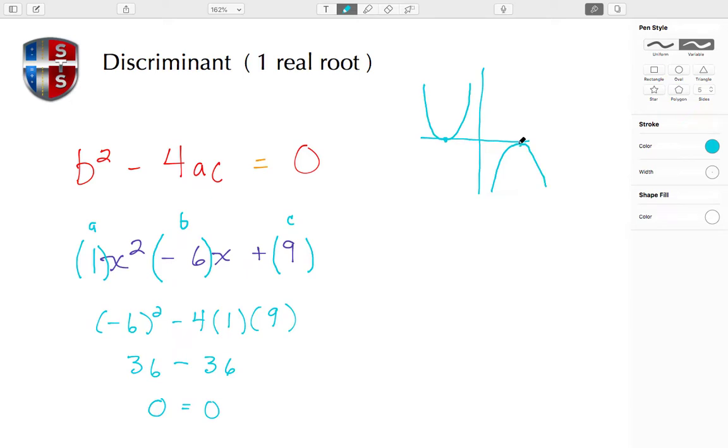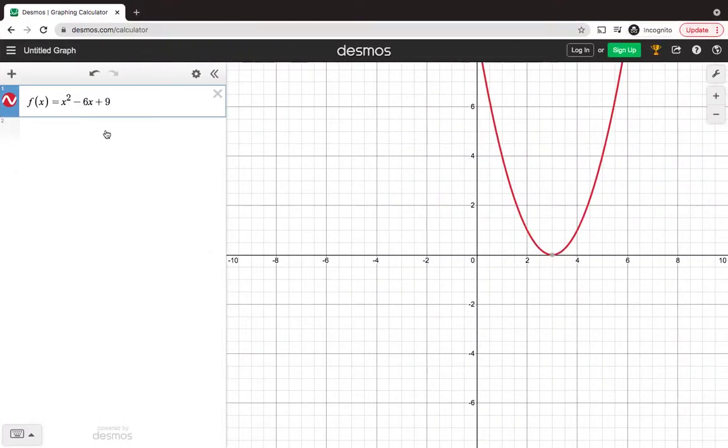Let's take a look at Desmos to see what this particular equation looks like. Here we have the equation x² - 6x + 9, or the function.